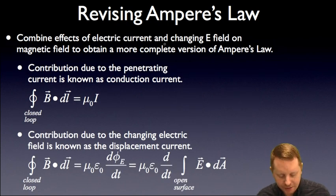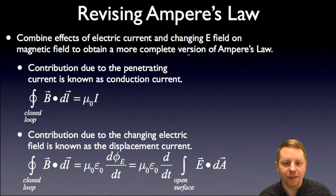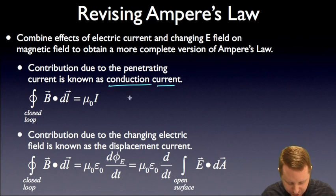So combining these effects of electric current and the changing electric field, their contribution to the magnetic field gives us a more complete version of Ampere's law. The contribution due to the penetrating current, what we've talked about previously, is known as the conduction current.